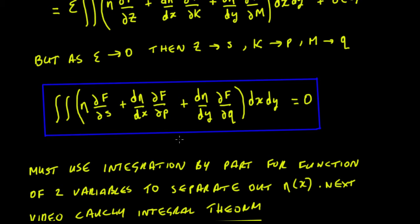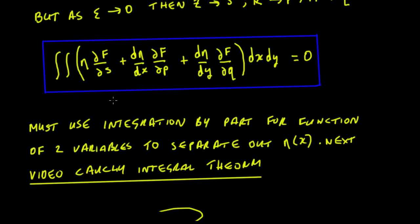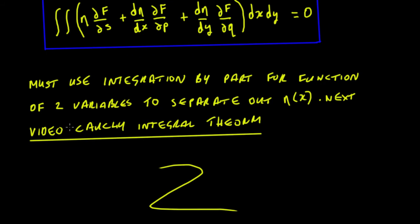So now what we're going to have to do is use something analogous to integration by parts in order to separate out η and get rid of the d·η/dx and d·η/dy terms, pull them out of the brackets, and then use the fundamental lemma to find the differential equation giving the extremal. But we can't really do that here because we'd have to use integration by parts for a function of two variables. So in the next video we're going to look at a way of solving this using the Cauchy integral theorem — we'll prove it there, and in the video after that we'll use it to find the solution to our problem.